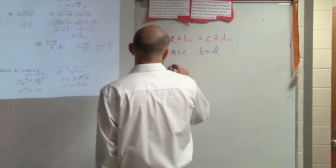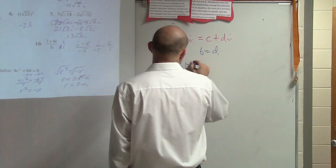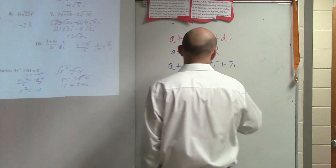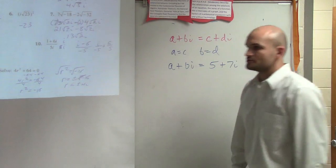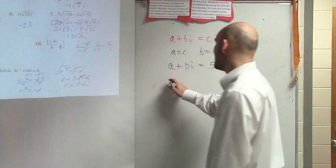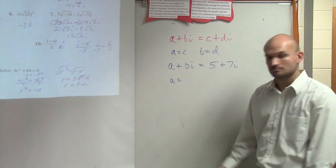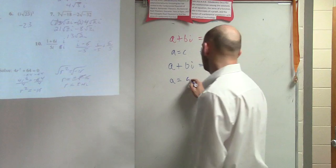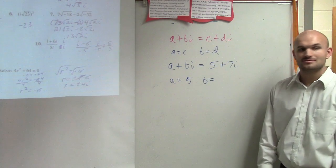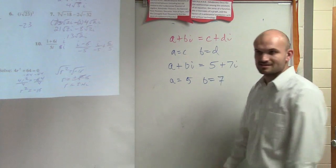Let's make it even easier. Let's say A plus B i equals 5 plus 7 i. So if these are to be equal, what does A have to equal? Five. And B has to equal 7.